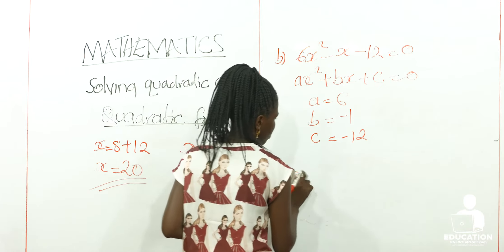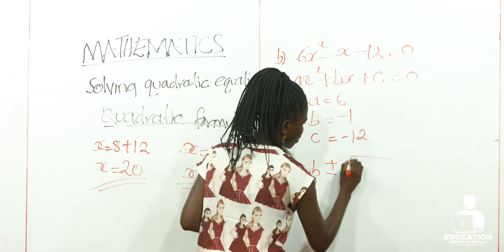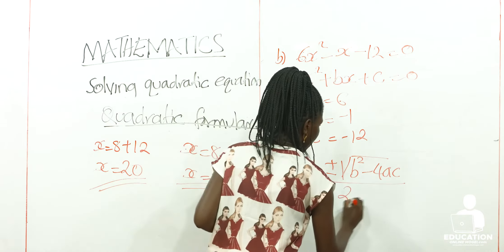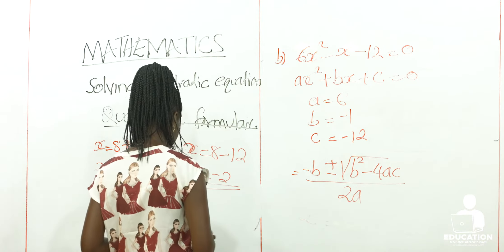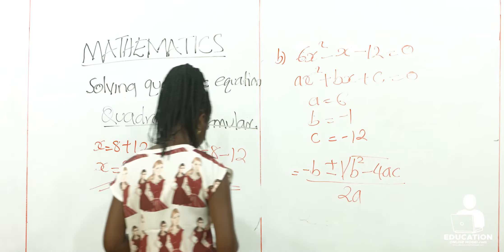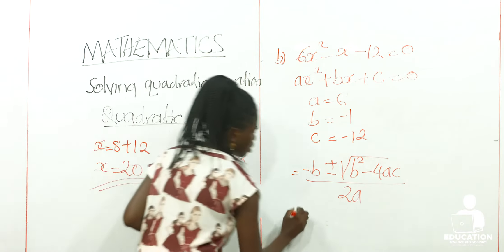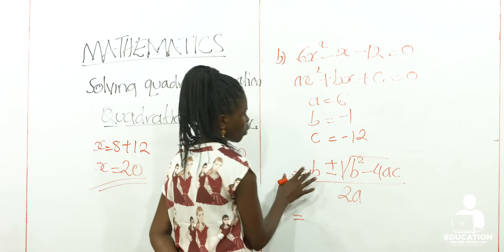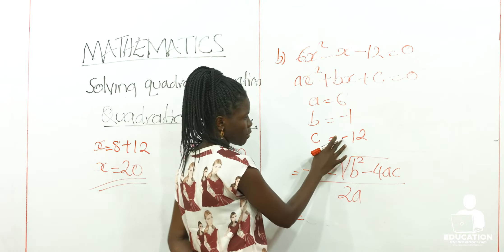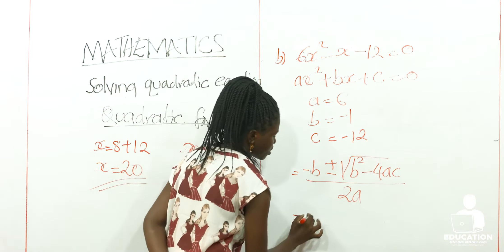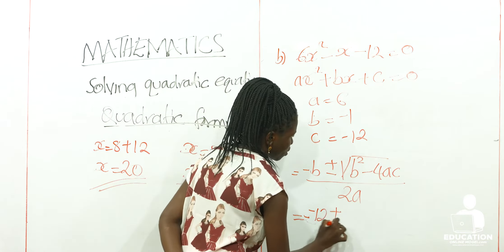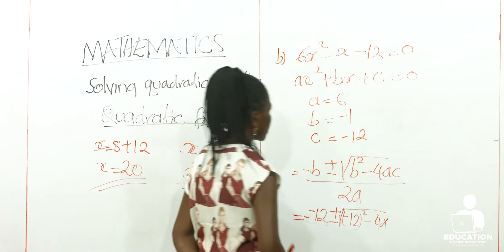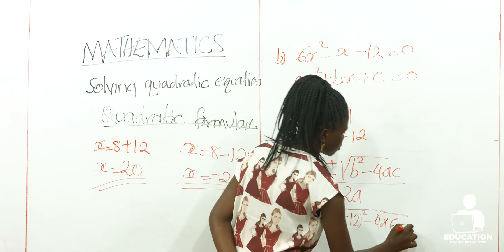So after getting the values of the coefficients, we come and write our formula: X is equal to negative B plus or minus root of B² minus 4AC, but all of it out of 2A. Here we are going to have: our value of B was negative 1, and the formula also has a negative, so we are going to have negative negative 1, plus or minus root of negative 1 squared minus 4 times our value of A which is 6, times our value of C which is negative 12.